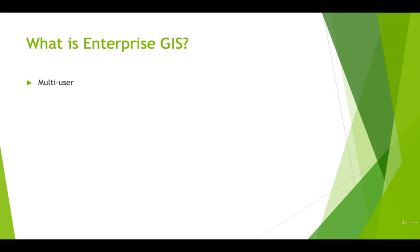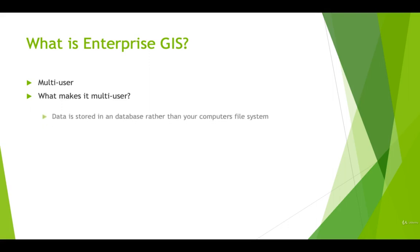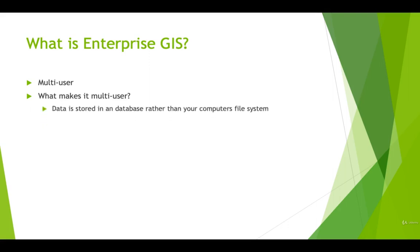I once wrote an application that allowed people to add information about free places to camp around the country. But what makes an Enterprise GIS multi-user? How is that different from the normal desktop GIS that we're used to? In an Enterprise GIS, your data is stored in a separate database rather than your computer's file system, and this provides some important advantages. It allows us to use existing database technology and extend it for geospatial data.